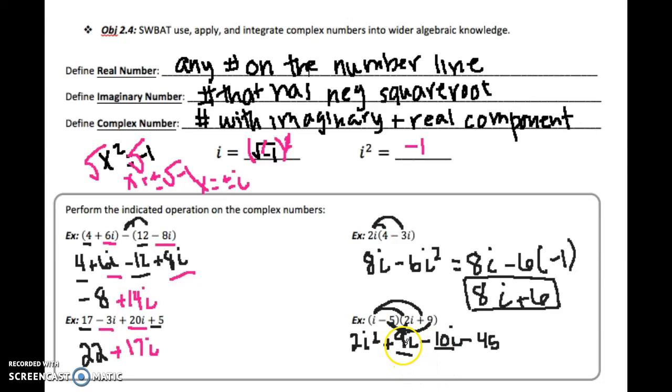So we have 9i minus 10i, which is going to give us negative 1i. And then this guy right here, instead of writing this as 2 times i squared, again, we know that i squared is equal to negative 1. So instead of i squared, I'm going to put negative 1. So we have 2 times negative 1 minus i minus 45, which is going to give us negative 2 minus i minus 45. And then lastly, we can combine this negative 2 and negative 45. So we're going to get negative i minus 47.